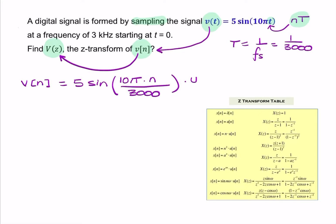And I multiply all of that by a unit step, because we're told that it starts at t equals 0. So, it's a causal signal. After sampling, it's a causal signal.